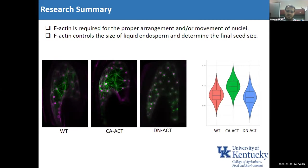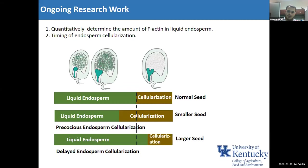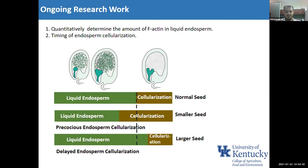I'm also interested in the quantitative difference of F-actin in liquid endosperm. My ongoing work aims to quantitatively determine the F-actin levels, since we found variation between overexpression and dominant negative forms. I'm also interested in observing how the timing of the liquid phase and cellularization phase changes in these lines, and I hope to get that data soon.